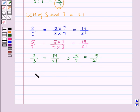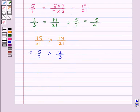Now, you can easily see that 15 upon 21 is obviously greater than 14 upon 21 which means that 5 upon 7 is greater than 2 upon 3. Or, you can say that the ratio 5 is to 7 is greater than the ratio 2 is to 3.